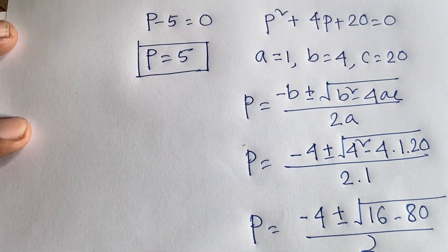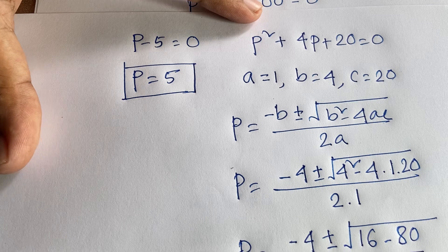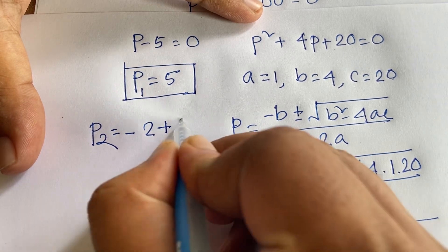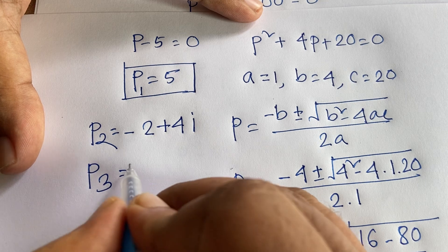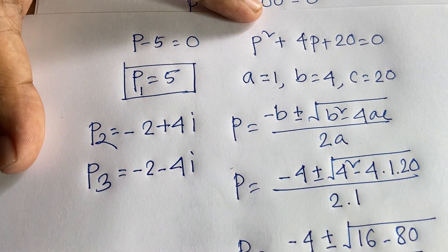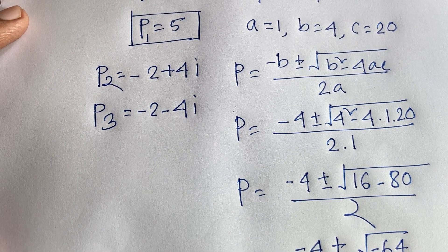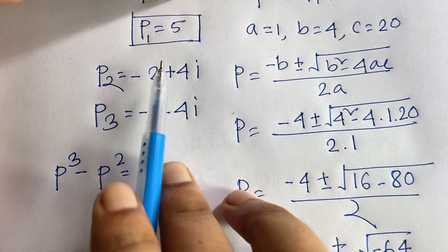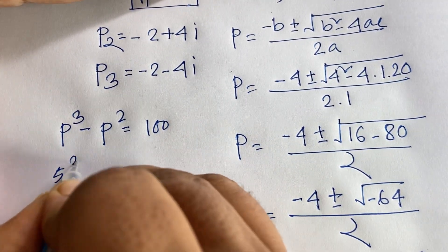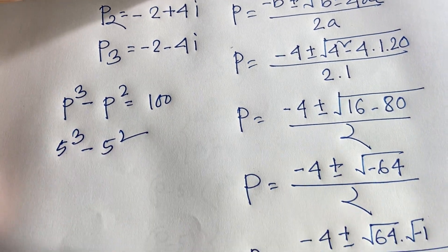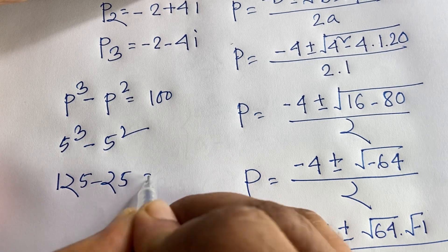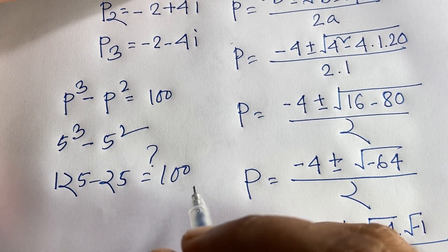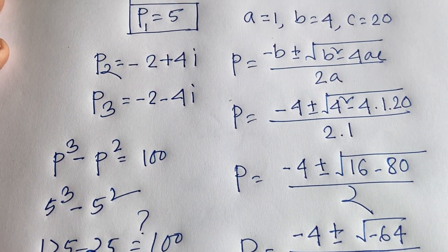So our final answer is P₁ equals 5. And our other answers are P₂ equals negative 2 plus 4i, and P₃ equals negative 2 minus 4i. To check our question: P to the power 3 minus P to the power 2 equals 100. With P equals 5: 5 cubed minus 5 squared equals 125 minus 25 equals 100. So P equals 5 is our correct answer. Thank you all. If you enjoyed this video, please subscribe to our channel for other interesting videos. Goodbye, take care.